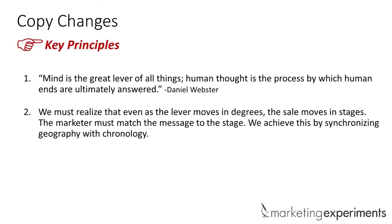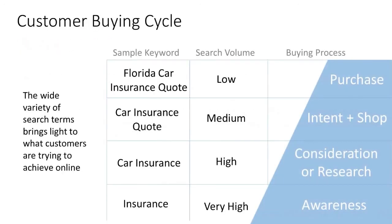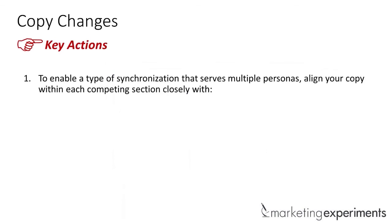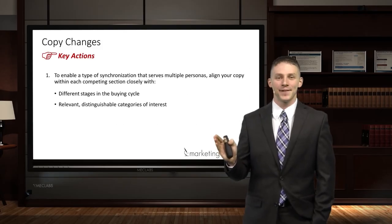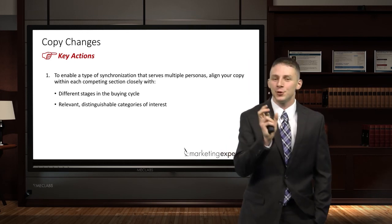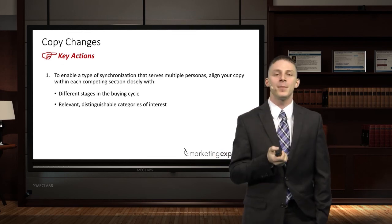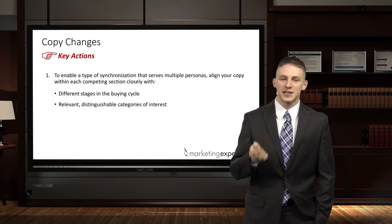So how do we do that? We've got to synchronize what's on the page — the geography — with the chronology. Just look at search terms: they evidence every stage of the buying process, all coming into your site at different points. If you're going to enable that kind of synchronization in your copy, you've got to align it with one or both of two things: different stages in the buying cycle, and relevant, distinguishable categories of interest. They need to be immediately distinguishable. If I had shown my daughter two shades of purple, I might have confused her — they've got to be clearly different, otherwise you create a stopgap in the mind and visitors hesitate or leave.